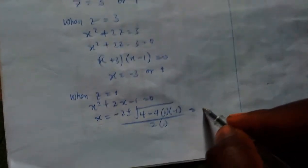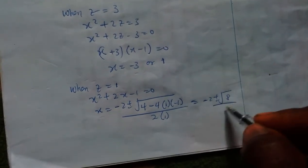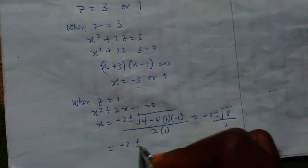I have it as minus 2 plus or minus square root of 8 all over 2, which gives us minus 2 plus or minus 2 root 2 over 2.